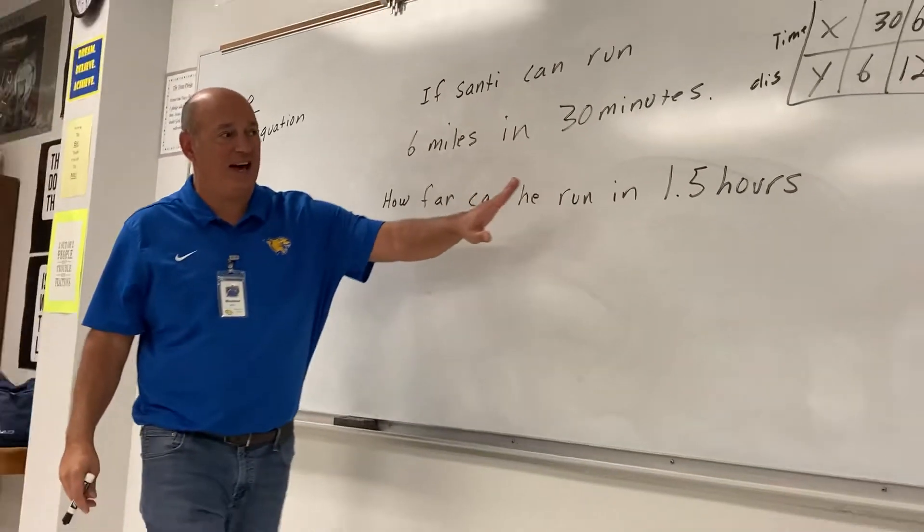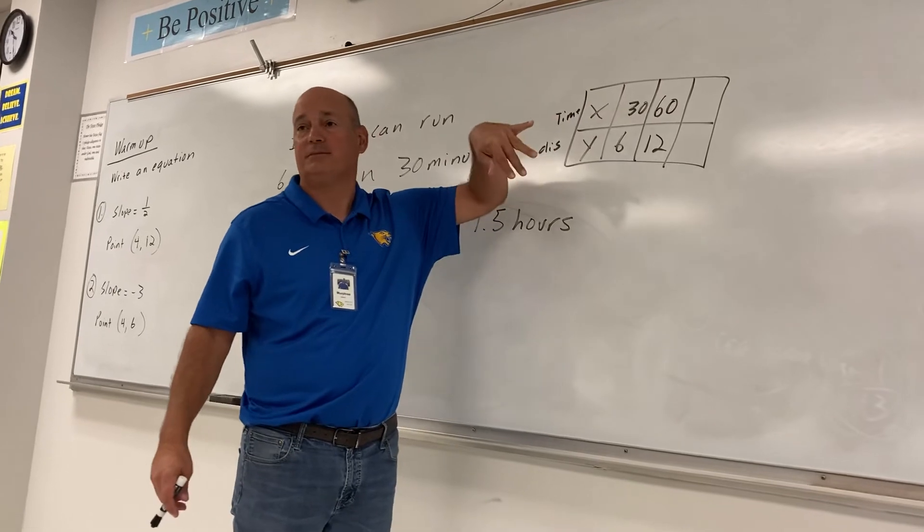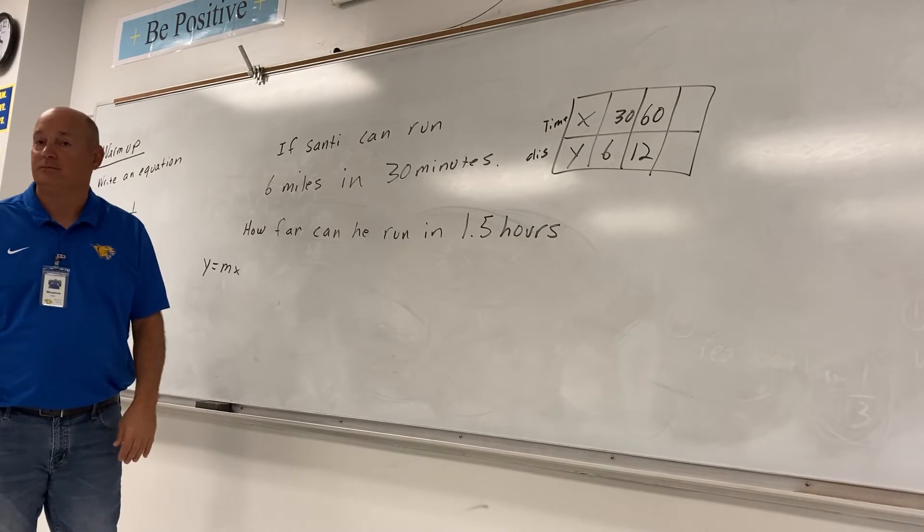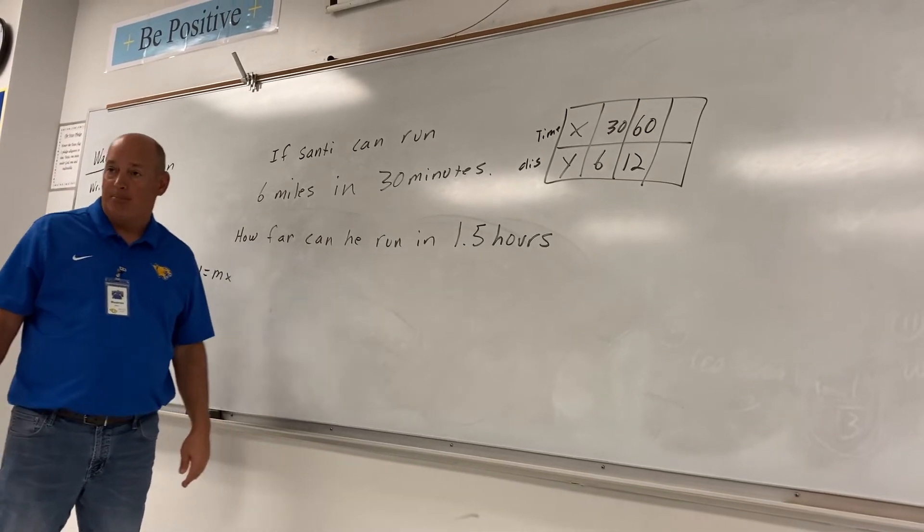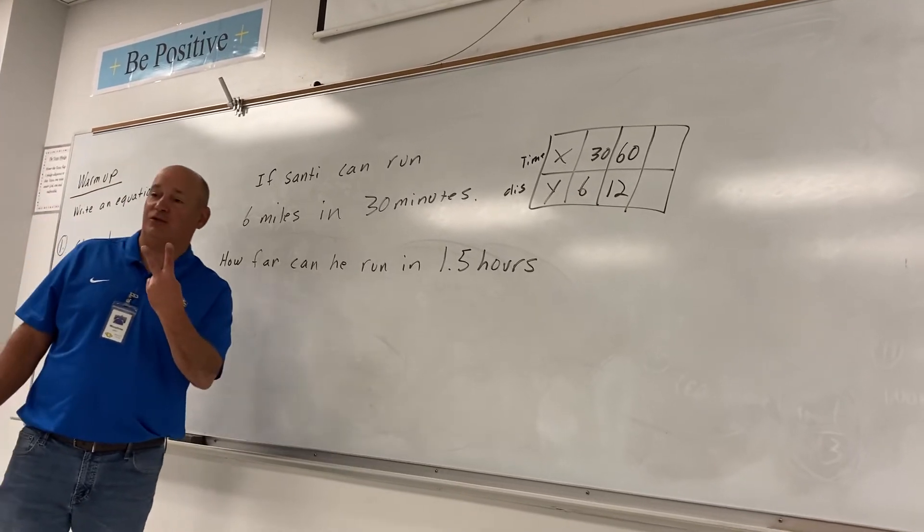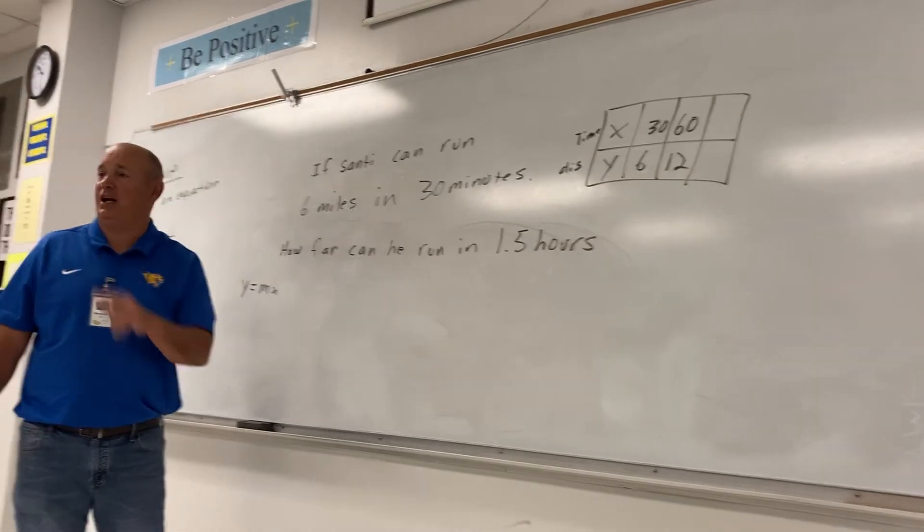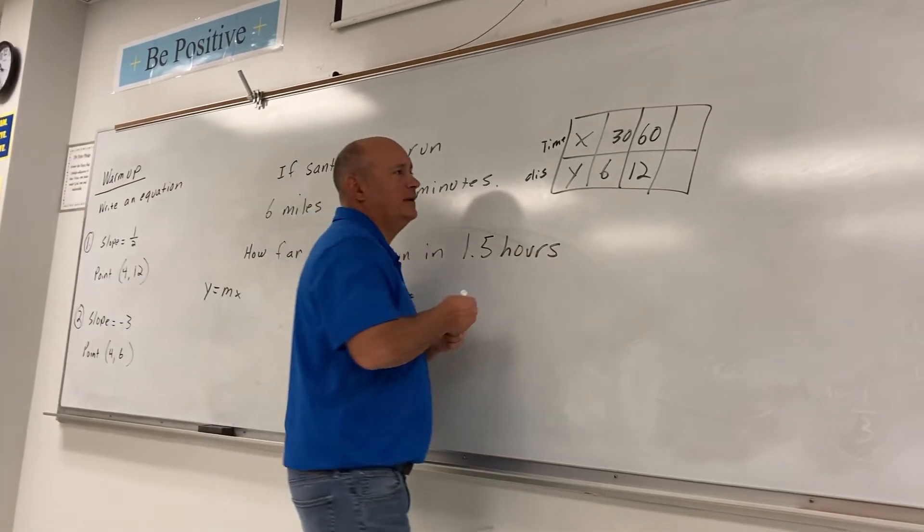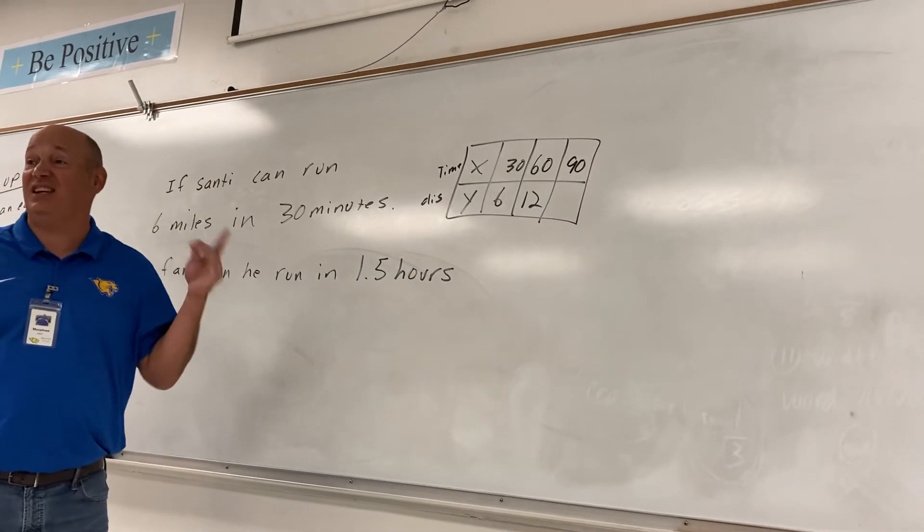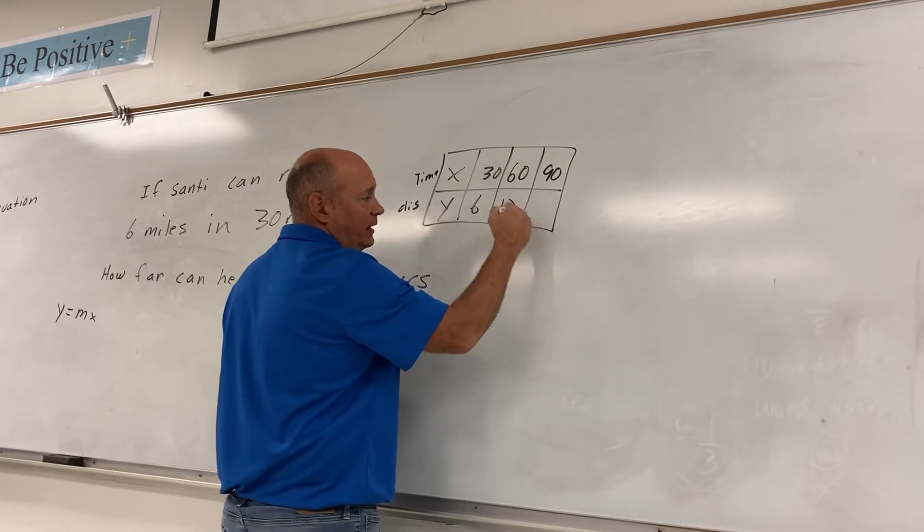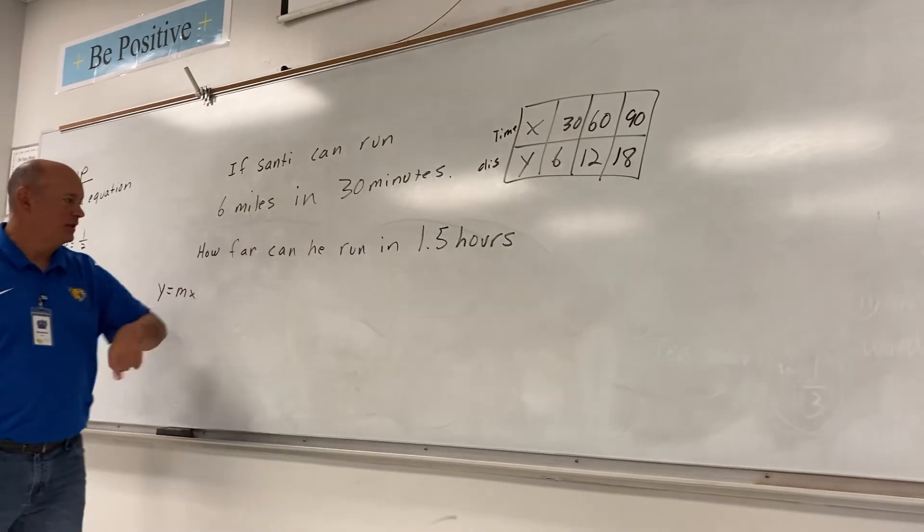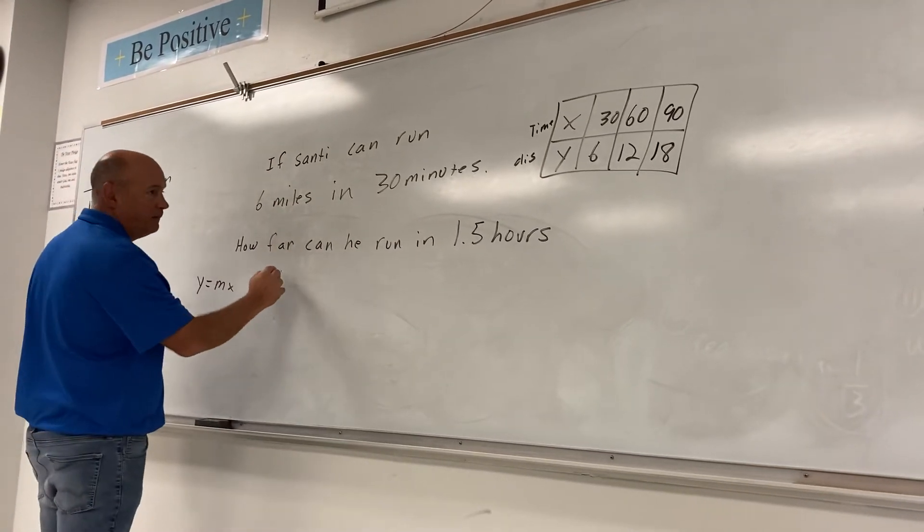We've got to get to one and a half hours. Well, how many hours are we at so far? One hour. We need to get a half more hour. What can we do? Add 30 more minutes. If we add 30 more minutes, wouldn't that be 90 minutes? 90 minutes is an hour and a half. What do I need to add here? Six more. How many miles? So in one and a half hours, Santiago could run 18 miles.